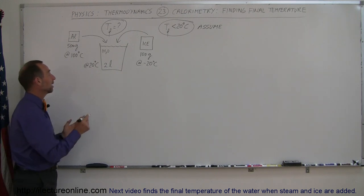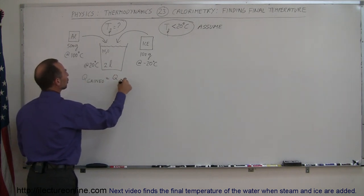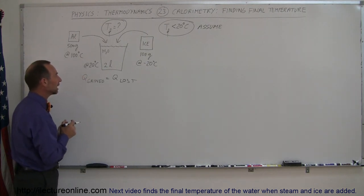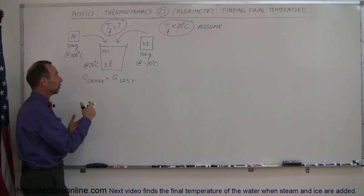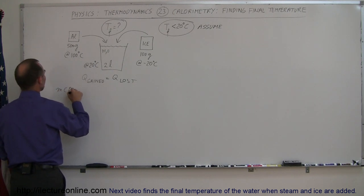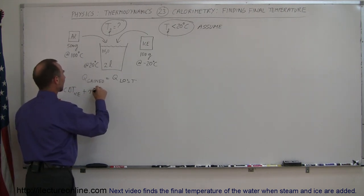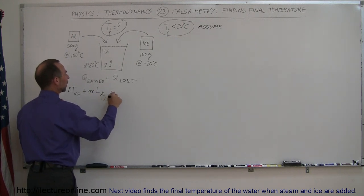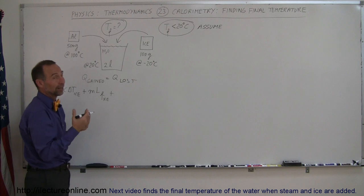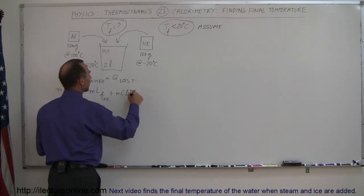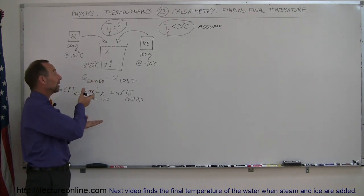To do a calorimetry problem, you want to say that Q gained must equal Q lost — all things gaining heat must equal all things losing heat. The ice will be gaining heat: first, the ice goes from minus 20 to 0, so we need M·C·ΔT for the ice, plus the heat gained by the ice when it melts, which is M times the latent heat of fusion, plus M·C·ΔT for the cold water as the melted ice rises from zero to the final temperature.